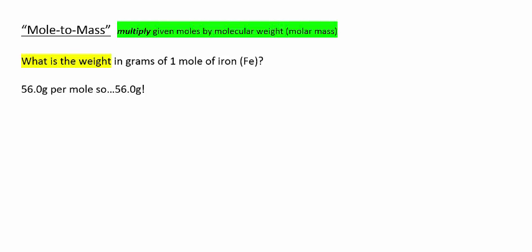Remember, molar mass means so many grams per one mole. So if the molar mass of iron is 56 grams per mole, the answer to this question is 56 grams.